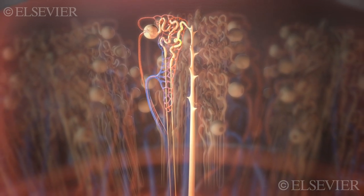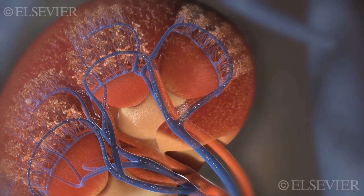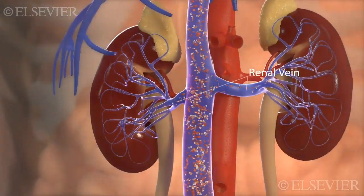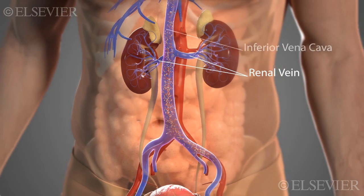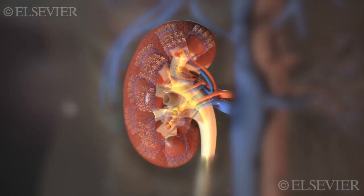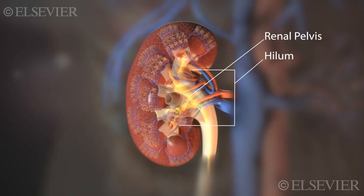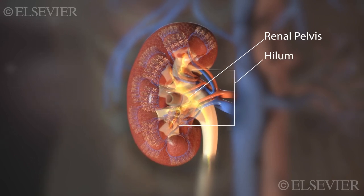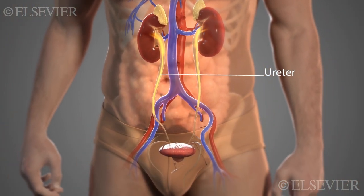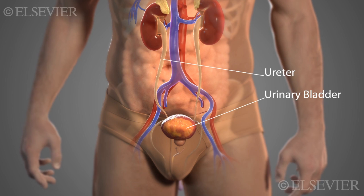Urine travels from the collecting ducts into the papilla of a renal pyramid. The peritubular capillaries merge into veins that ultimately drain into the renal vein. The renal vein exits the kidney to drain into the inferior vena cava. The renal pelvis of the kidney narrows as it exits the hilum, which is the indentation of the kidney, to become the ureter. Urine then travels down the ureters, which are about 10 to 12 inches long, and into the urinary bladder.